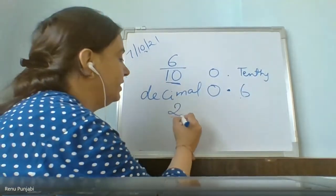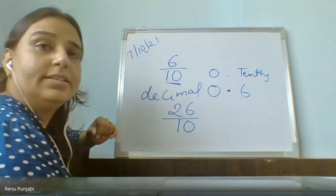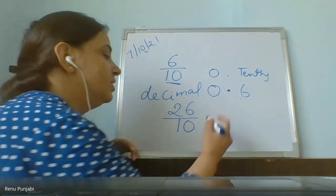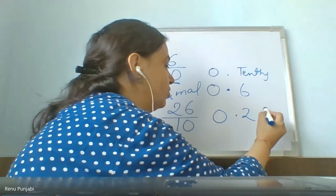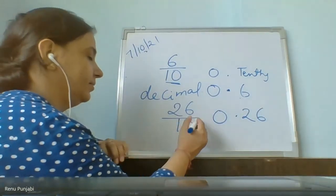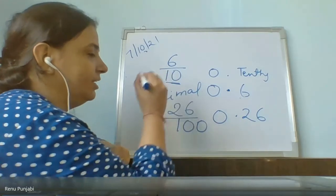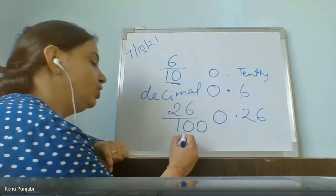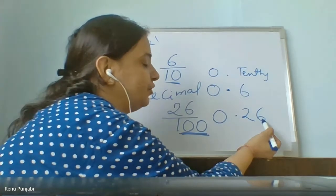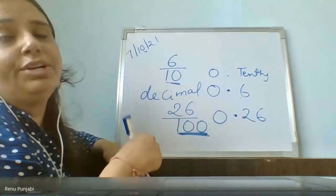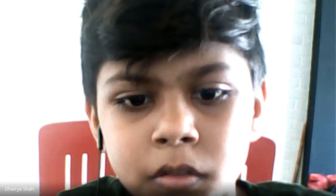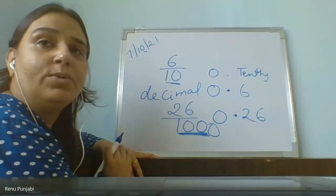Suppose you have 26 upon 10 — how will you write the decimal? Nothing is in the whole, so it is zero point twenty-six. Suppose there is a hundred in the denominator — how many zeros does it have? Two zeros. So count two digits from the back: this is 2 and 6, then put the decimal. And if you have thousand as a denominator but only two digits in the numerator, you add a zero before the numerator — not at the last. Because to make three digits, we add one zero in the beginning.